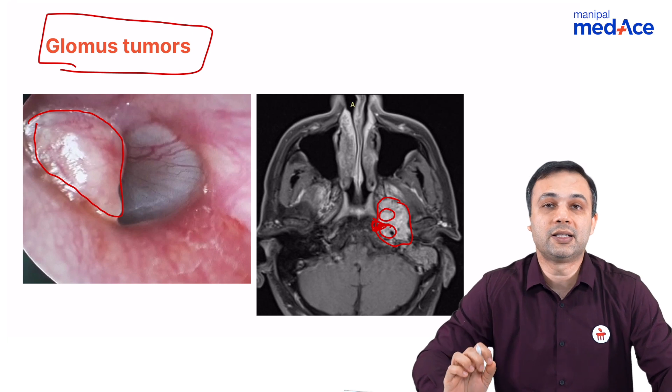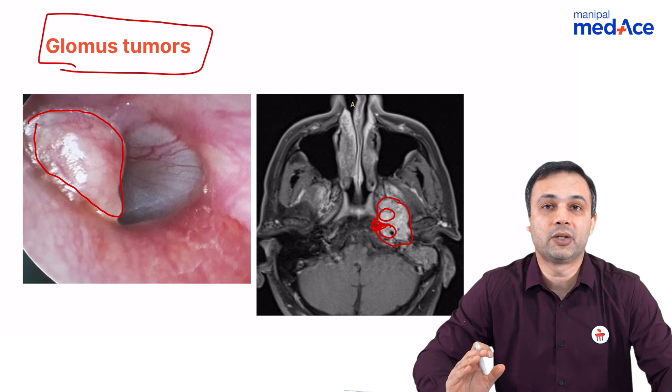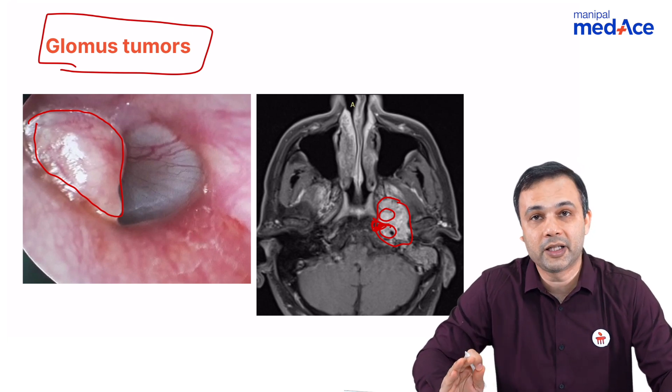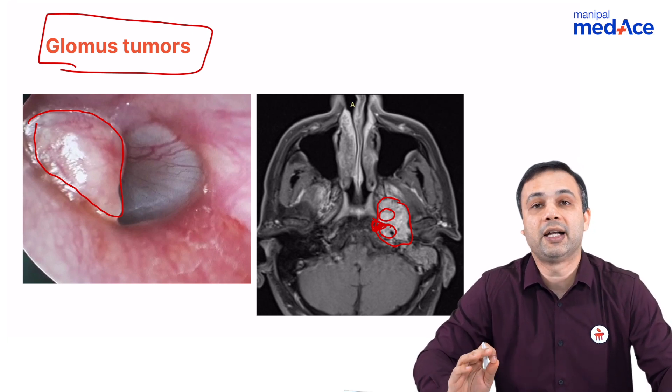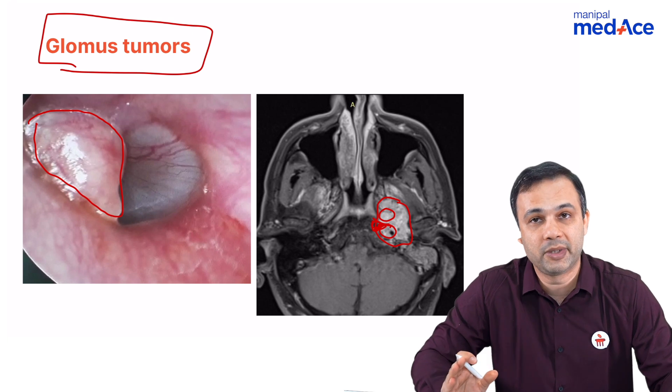Once again, digital subtraction angiography will help us identify the bleeders and at the same time embolize them as well. The treatment of choice is surgery in cases of glomus tumors.